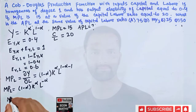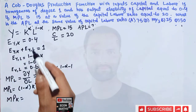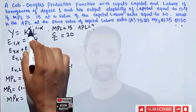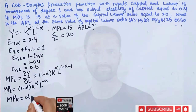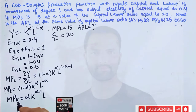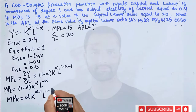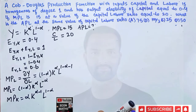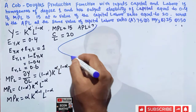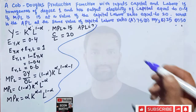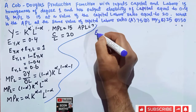Similarly, the marginal product of capital is found by differentiating with respect to K. Applying the power rule, alpha becomes the coefficient: MPK = α × K^(α−1) × L^(1−α).